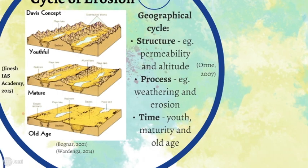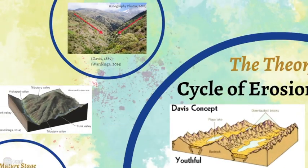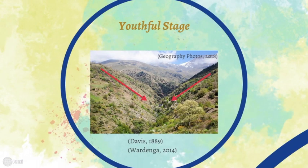The cycle begins in the youthful stage with rapid uplift and carving of the land surface. As a result, the river gradient increases, eroding the land, forming steep V-shaped valleys and raised uneroded areas of the peneplain known as intervalley ridges.